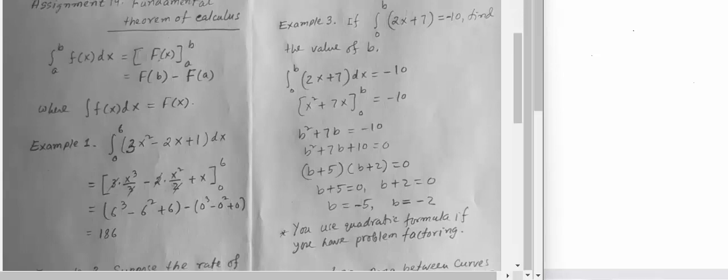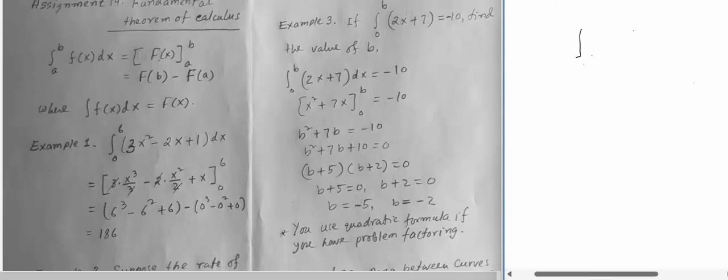The simple idea: you're taking integral 0 to b of 2x plus 7, take the plain integral, and that answer we said negative 10, the value given in the problem.